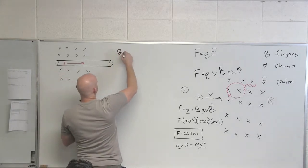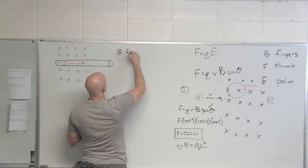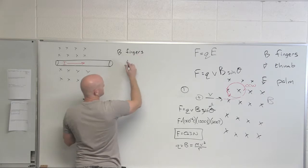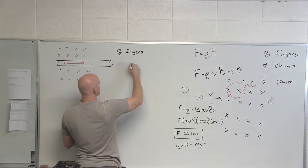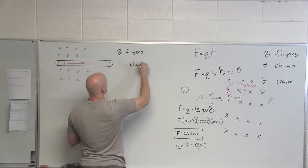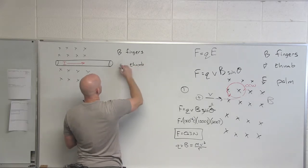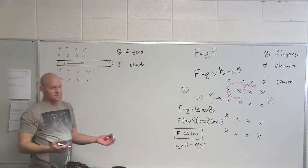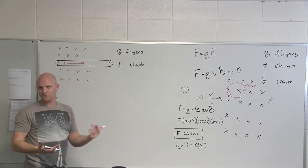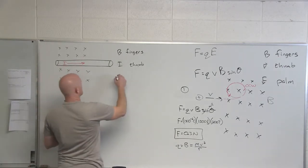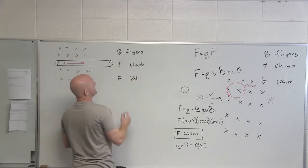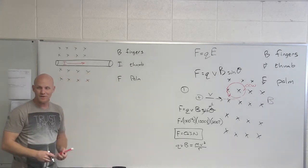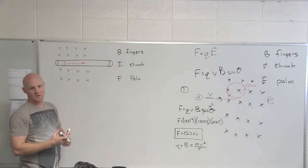And we have another right-hand rule for this. So your magnetic field is still your fingers. Guess what your velocity is now, or sorry, guess what your thumb is now since it's not technically velocity. It's the direction of the current, but the current really is just the direction of the flow of positive charges. Cool. And then coming out your palm is still the force. So technically this is a separate right-hand rule, but really it's kind of the same right-hand rule.